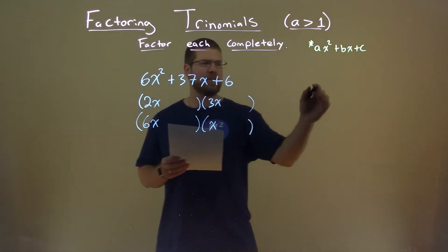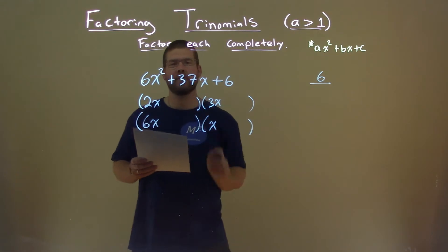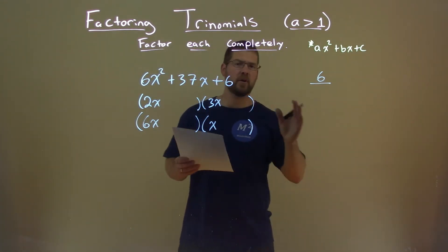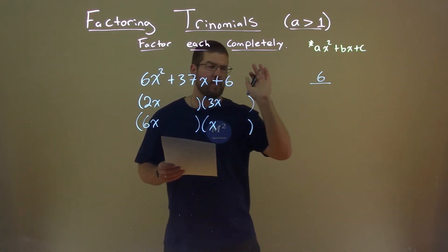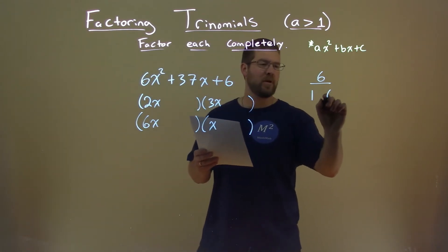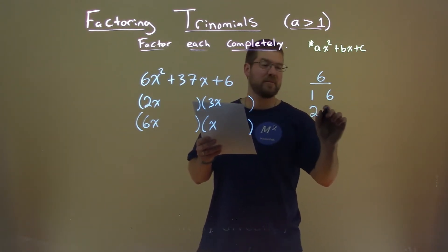So now let's look at the c value. c is positive, but so is b, and we're looking at c and saying, okay, because of that, what two numbers multiply to be positive 6? And that's 1 and 6 and 2 and 3.